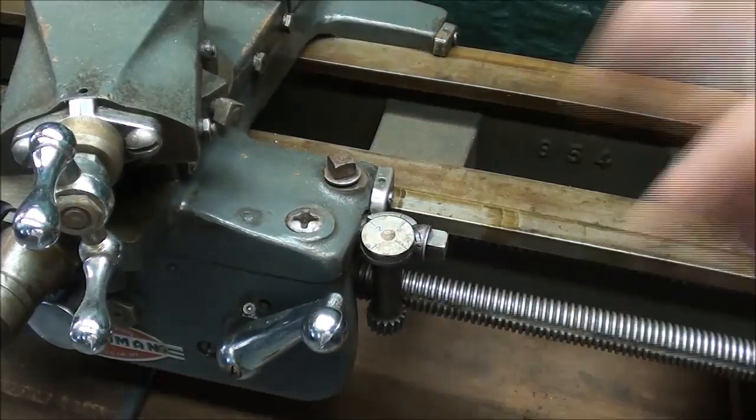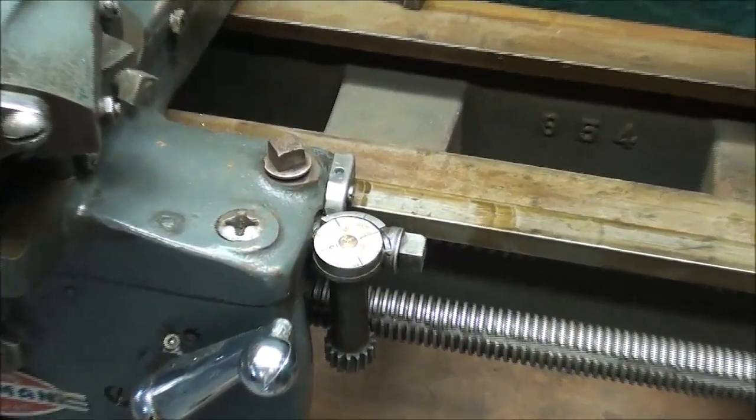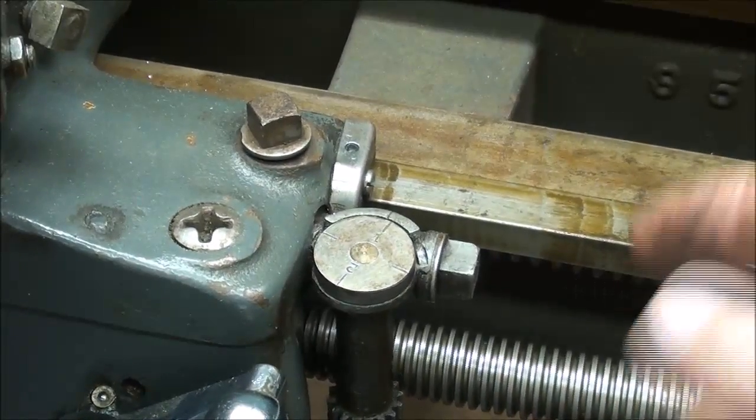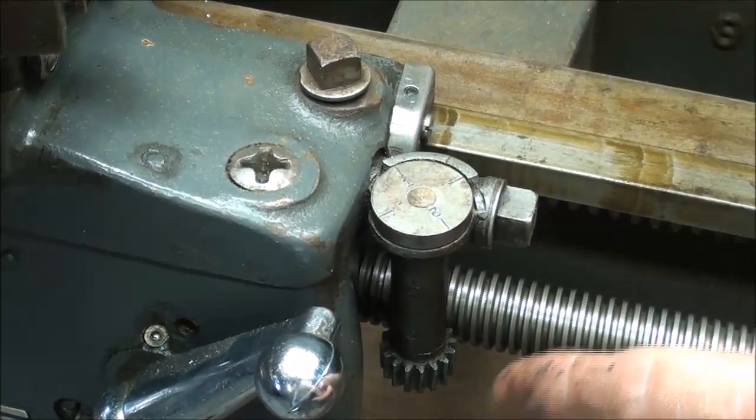This is the threading dial. It is engaged into the lead screw at this time. It can be backed away by loosening this and backing it away from the lead screw to minimize wear.